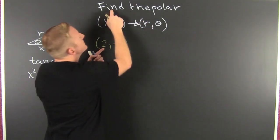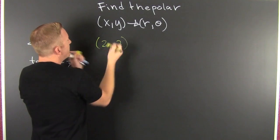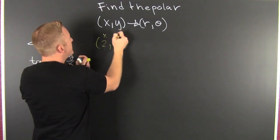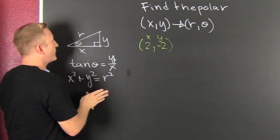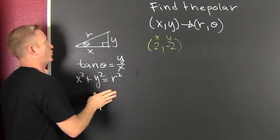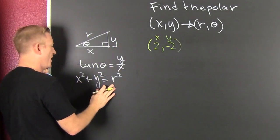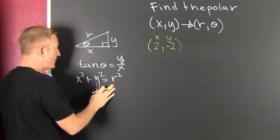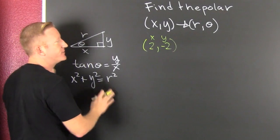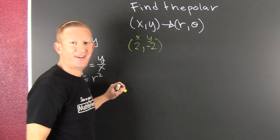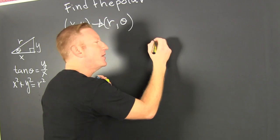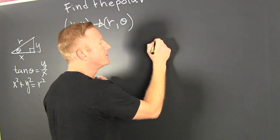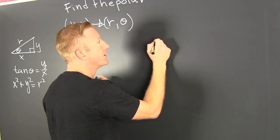What am I doing? I'm taking this X, Y world — where this is my X and that is my Y — and I'm going to transform it into my polar world. Enough messing around. I need to go and I need to find my R. How do I find my R?